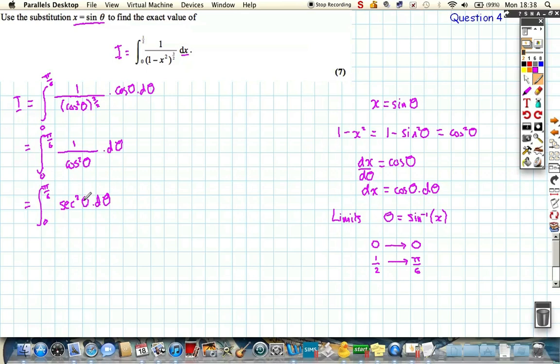And looking at our, well, we should know that the integral of sec squared, and if we don't, we can check from our formula sheet, sec squared is really just tan theta, and then between the limits, 0 pi over 6.